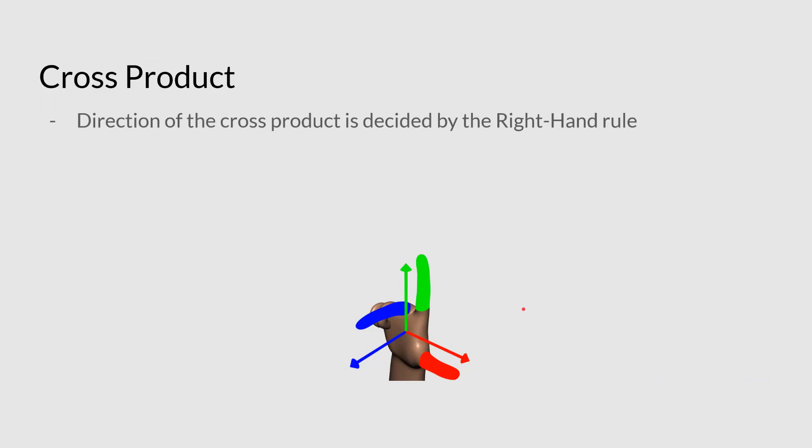Now, how do you know which direction it's going to go in? Well, this is how. Cool. Thanks for coming to my TED Talk. You know, so the direction of the cross product is decided by the right-hand rule.